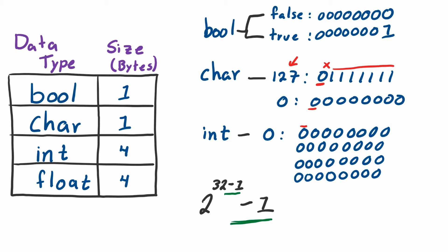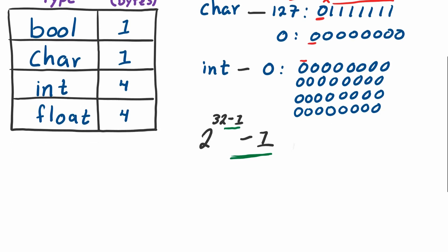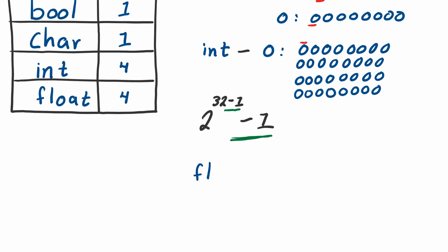The last one that we have to talk about is a float. Floating numbers are encoded in binary format very differently than integers, booleans, and characters because the floating number has a fractional part. There's a whole other encoding mechanism which I'm not going to talk about in this video—that requires an entire video on its own.